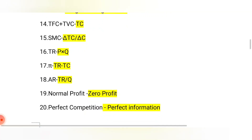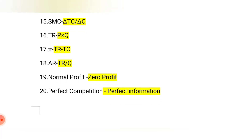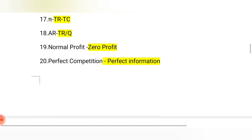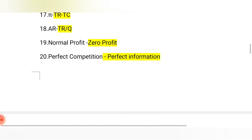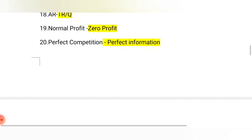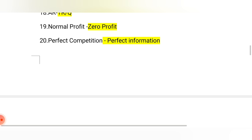SMC formula: any change in total cost divided by any change in input gives you short-run marginal cost. TR equals price multiplied by quantity. Profit (π) equals total revenue minus total cost. Average revenue equals total revenue divided by quantity. Normal profit is where you do not get any extra profit — zero economic profit. Perfect competition is where people have perfect information.